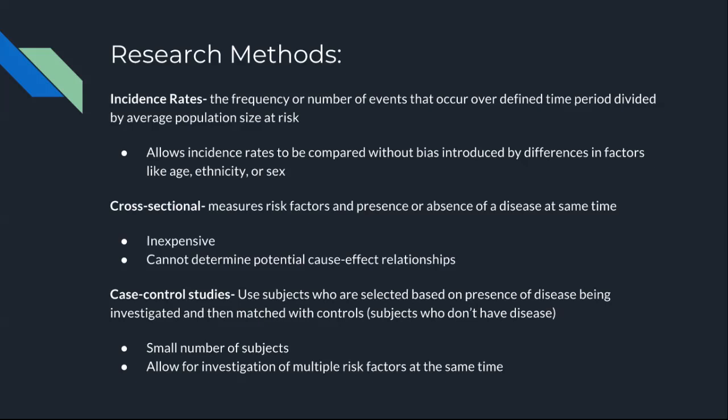There are some research methods. Incident rate is the frequency or number of events that occur over a defined time period divided by average population size at risk. It allows incident rates to be compared without bias introduced by differences in factors like age, ethnicity, or sex.